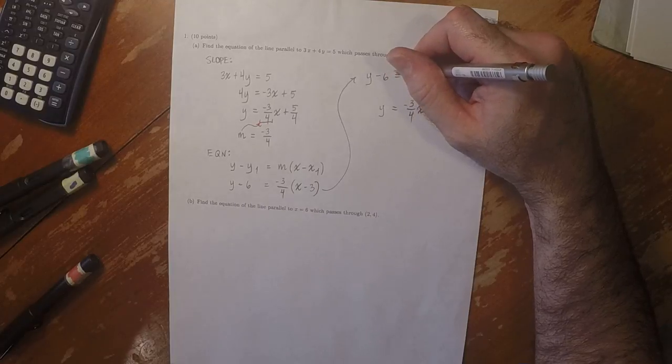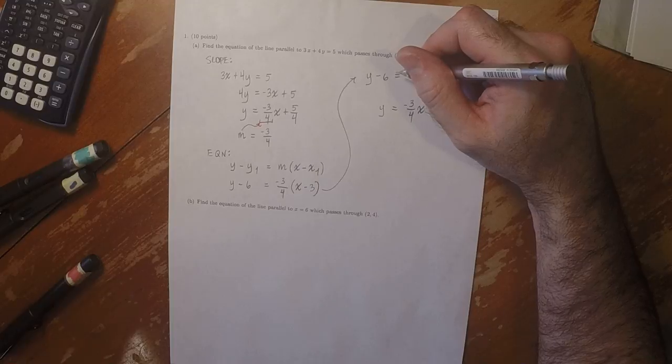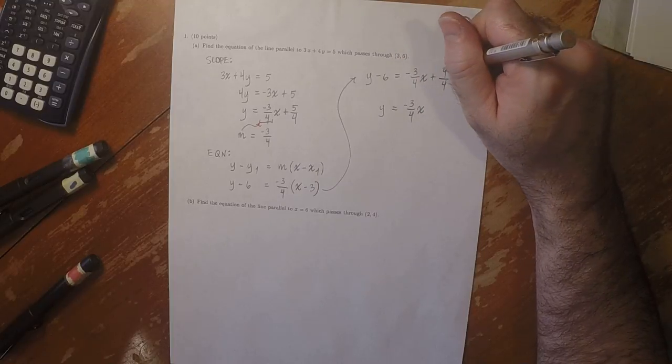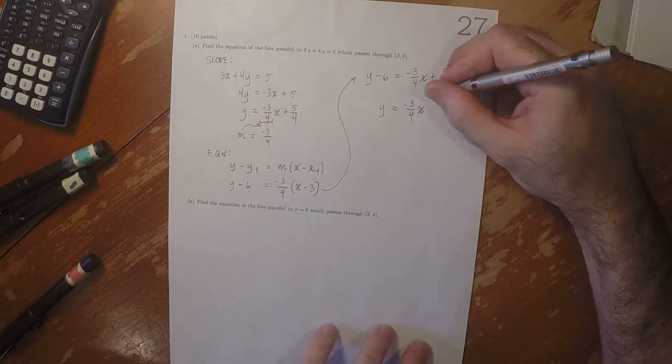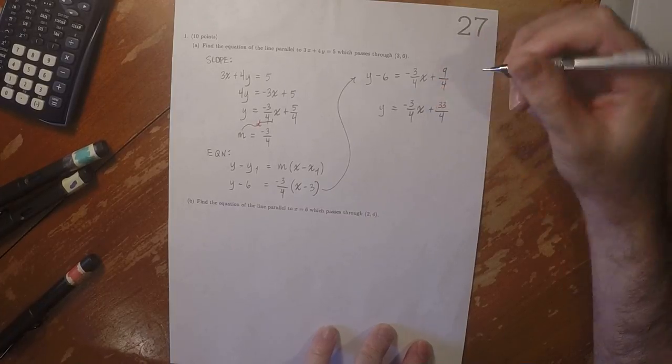6 is 24 fourths. And then 24 plus 9 is 33. So plus 33 fourths.